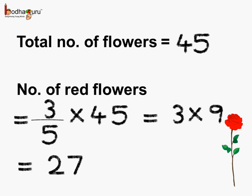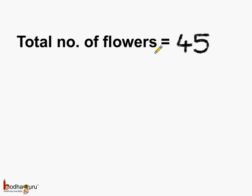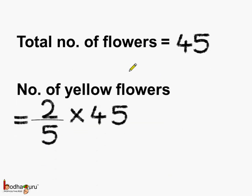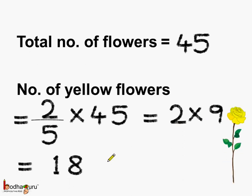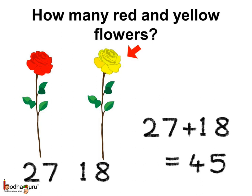Next, we will find the yellow flowers. The total number of flowers is equal to 45, and the number of yellow flowers is equal to 2 by 5 multiplied by 45. We again reduce this by dividing both the numerator and denominator by 5 — 5 nines are 45 — so this gets reduced to 2 into 9, which is equal to 18. So the number of yellow flowers is equal to 18. There are 27 red flowers and 18 yellow flowers.